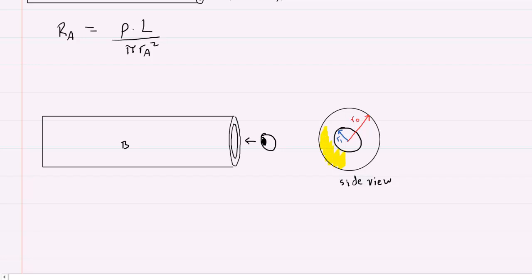Now, the cross-sectional area is going to be the area of this sort of donut-shaped region right here. And to get that area, and we can say this is the area for wire B or conductor B, we would have to take the area of the outer circle and subtract the area of this inner circle. So, in other words, you would have pi multiplied by the outer radius squared minus pi multiplied by the inner radius squared. So that would give you the area of that yellow donut-shaped region.